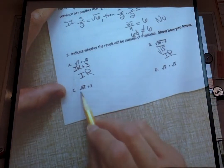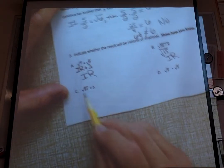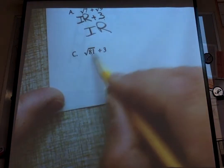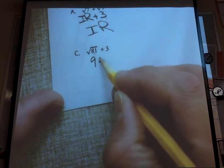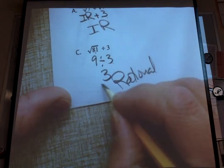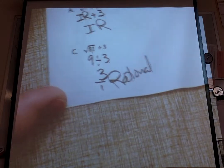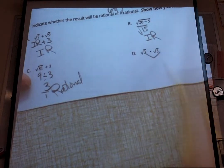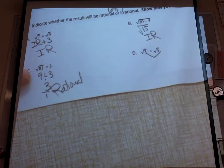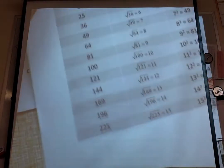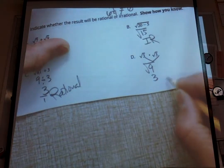Part C: we have the square root of 81 divided by 3. Notice the square root is just over the 81, not including the divided by 3, so we do that first. The square root of 81 is 9, and 9 divided by 3 is 3. So this one is rational — it's a whole number, and you can put a whole number over 1. Part D: when we're multiplying, we just multiply the two numbers inside the square roots. So 3 times 3 is 9, and we still have the square root. The square root of 9 is 3. So the answer is going to be 3 — a whole number, so it's rational.